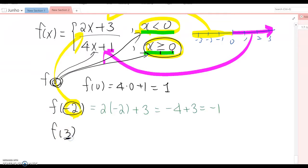Three is bigger than zero, so you are following this one, this equation. So it becomes 4 times 3 plus 1 equal to 12 plus 1 equals 13.